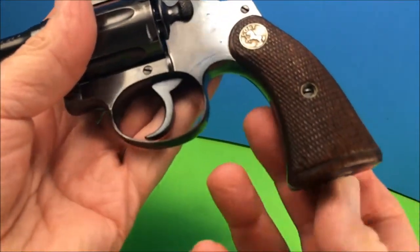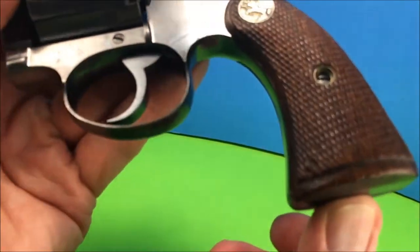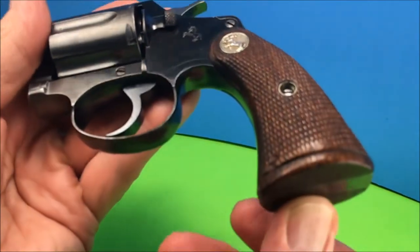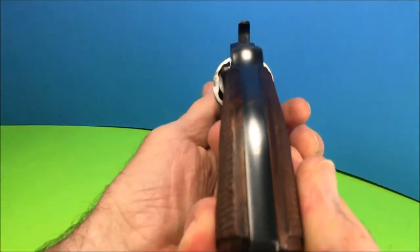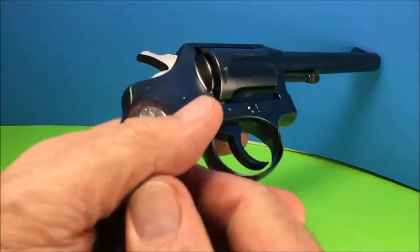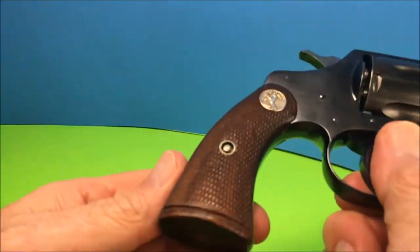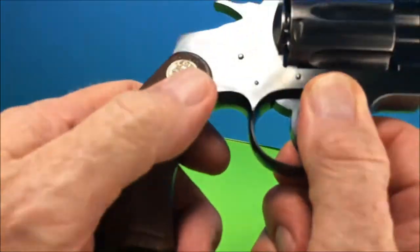Yeah, look at those grips. Nice walnut checkered silver medallions. No cracks. No rust on the back strap. Nice solid grips. Checkering still there.